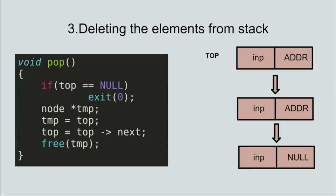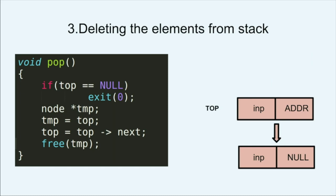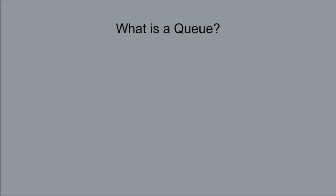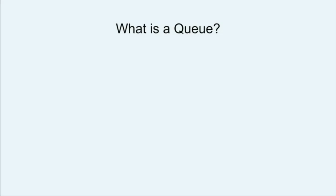Now we'll see how to pop nodes from the stack. The node to be removed is called tmp and the top pointer is made to point to the next node. Then the memory assigned to tmp is deallocated. This is done until the last node is removed, after which top points to null.